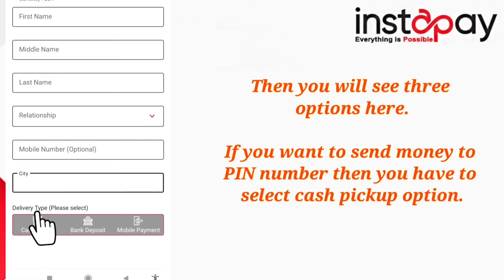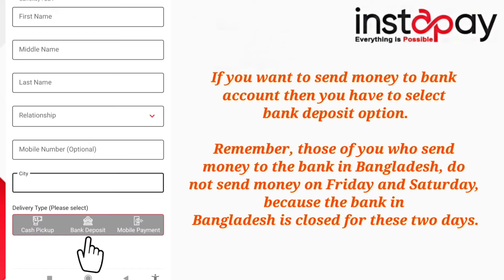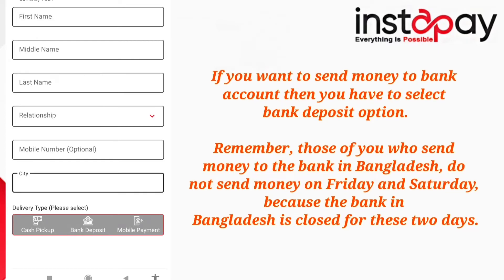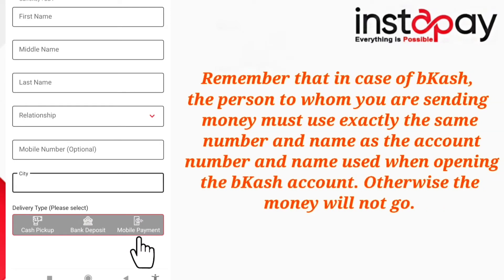You will see three options here. If you want to send money for cash pickup, you have to select the 'Cash Pickup' option. Remember, if you send money to cash pickup and have given the wrong beneficiary name, you can contact the office and get it corrected. If you want to send money to a bank account, select 'Bank Deposit' option. If you want to send money through bKash or Rocket, select the 'Mobile Payment' option. Remember, in the case of bKash, the person receiving must use exactly the same number and name as used when opening the bKash account, otherwise the money will not go through.